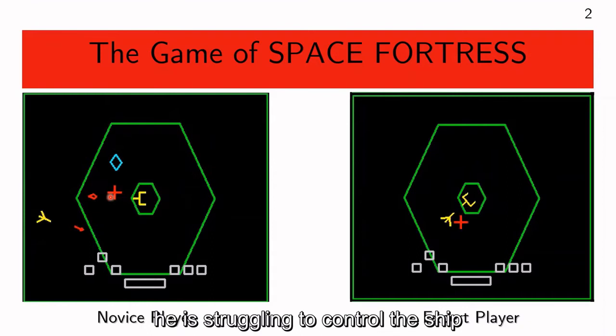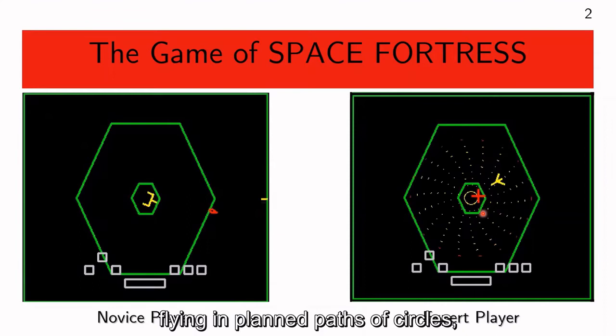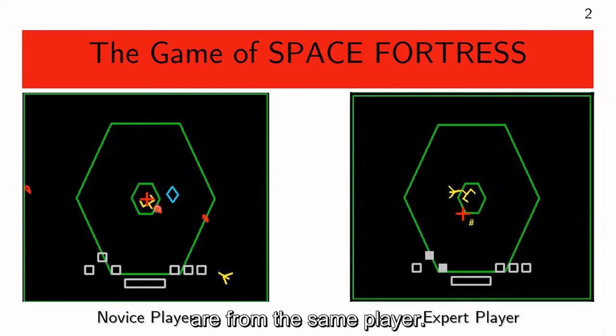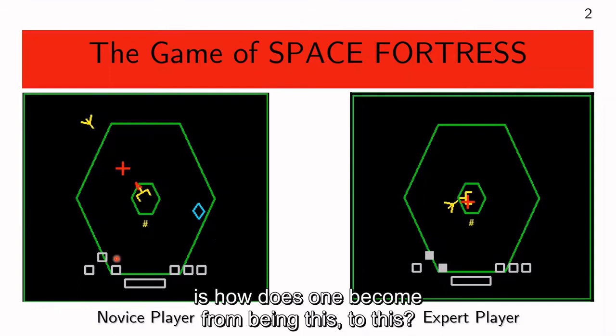The novice player seems quite clueless, struggling to control the ship, and therefore not being able to really fight the fortress. On the other hand, the expert player certainly looks like they're on a mission — flying in planned circular paths, shooting periodically and frequently, and deviating from the plan only to deal with the mines. Actually, both of these demonstrations are from the same player: the left showing a game very early in practice, and the right after lots of practice.